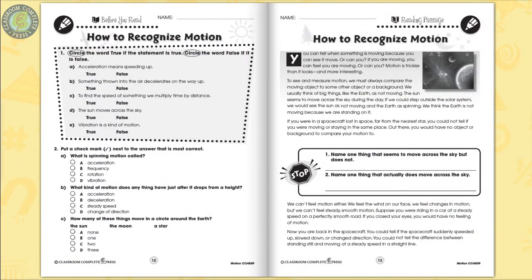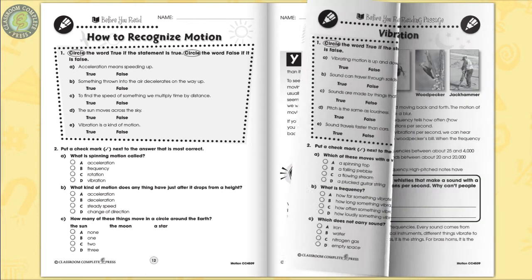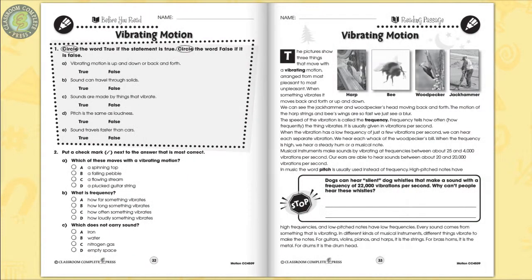Every chapter has a Before You Read section to see what learners already know about the topic, ideal for differentiated learning. Recognize if things are standing still or in motion. The reading passage is where you'll find all the curriculum content. Find out about frequency and pitch in vibrating motion.